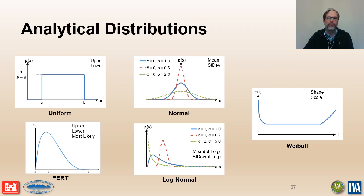The normal distribution is an unbounded two-parameter distribution defined by the mean and the standard deviation. The log-normal distribution is a two-parameter distribution with a lower bound at zero and no upper bound, defined by the mean and standard deviation of the logarithms of the data. This distribution also shows up relatively frequently because of the central limit theorem.